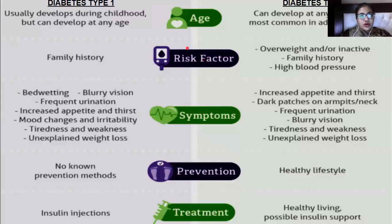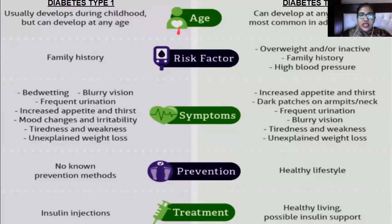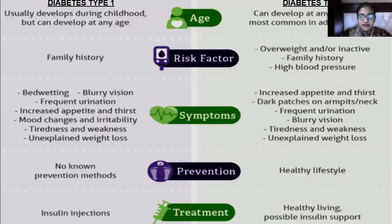Type 1 diabetes usually develops during childhood but can develop at any age. Risk factors include family history. Symptoms include bed-wetting, blurry vision, frequent urination, increased appetite and thirst, mood changes and irritability, tiredness and weakness, and unexplained weight loss. Prevention is not very specific.